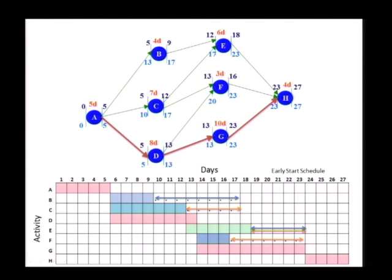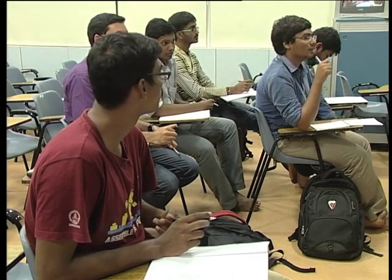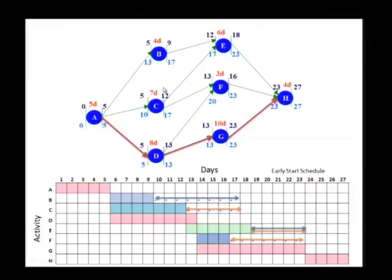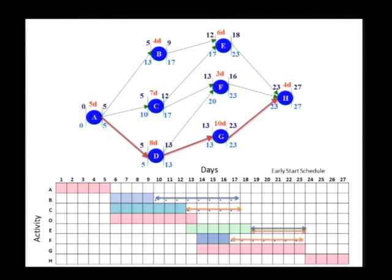So if I was going to think of an equation for independent float, what would it look like? It is the minimum of early start of the successor, minus the maximum of late finish of the predecessor, minus the activity duration. So the formula is: minimum early start of successor, minus maximum late finish of predecessor, minus activity duration. The challenge is you will have to look through the predecessor-successor relationships, make sure you identify them properly, and then do this calculation.